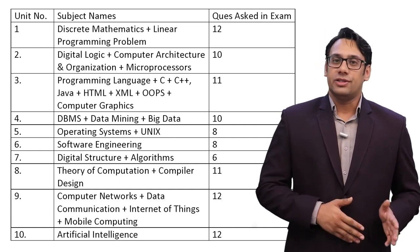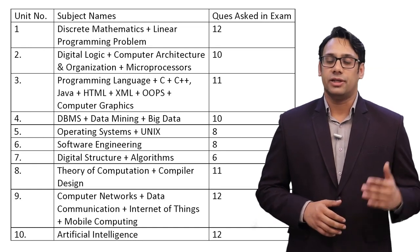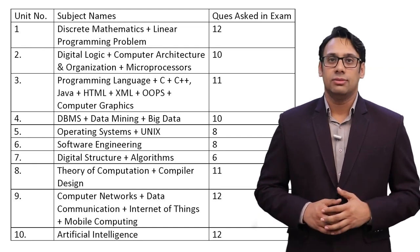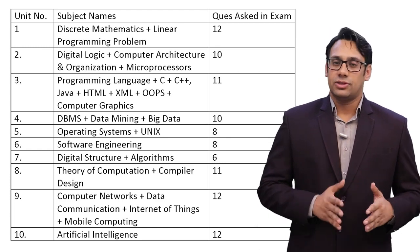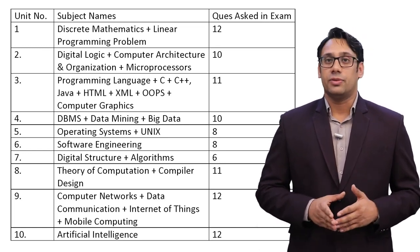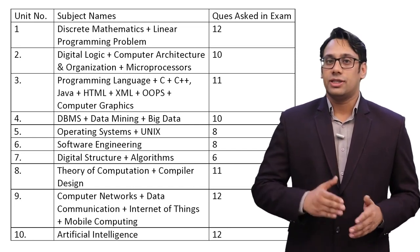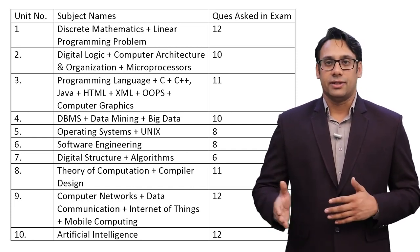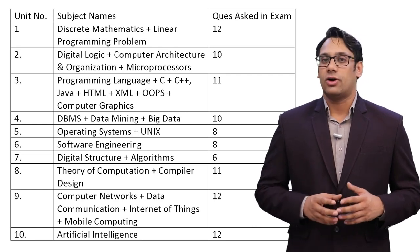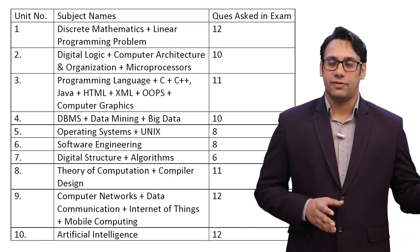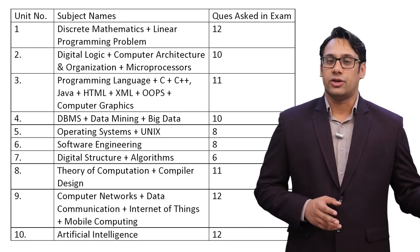Unit 6 is software engineering — they asked 8 questions from it. No compromise on this unit; you have to complete it thoroughly. Unit 7 is data structures and algorithms — also very important, because without studying data structures you cannot study algorithms. Next is TOC plus compiler design. Compiler design is becoming increasingly important; in the previous July 2018 examination they did not ask even a single question from compiler design.